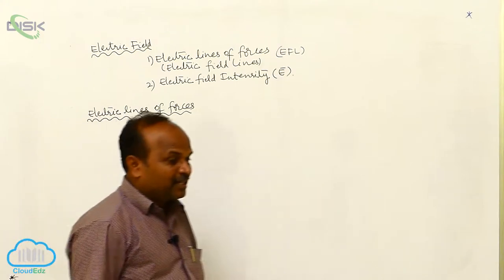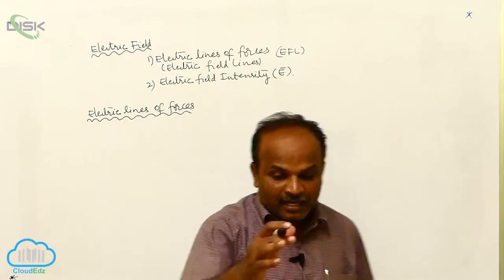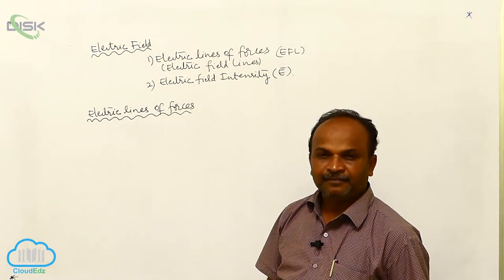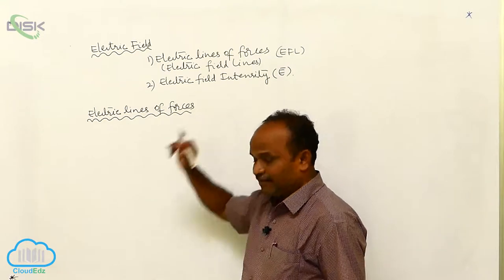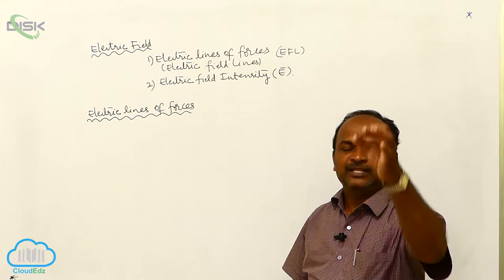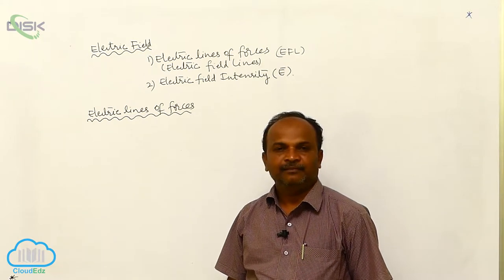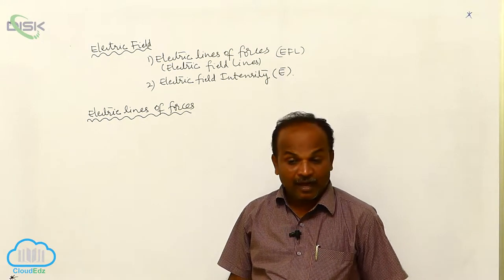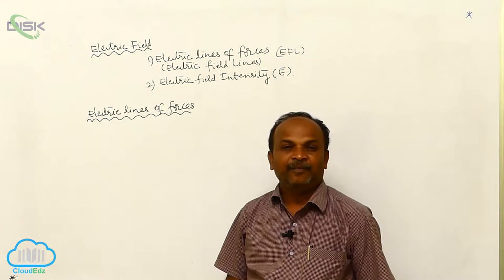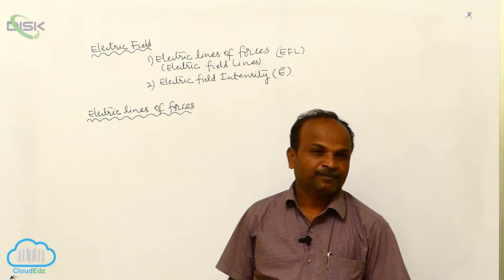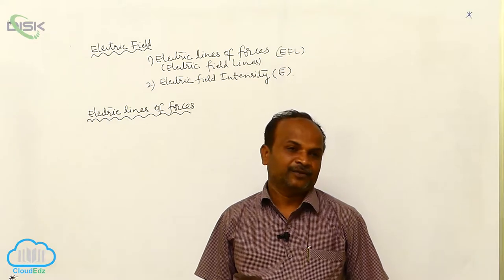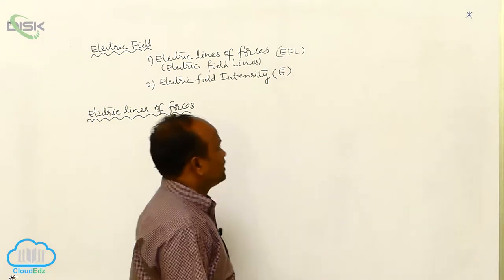To explain the behavior of the electric field, the concept of electric lines of forces was proposed by Michael Faraday. The definition of electric lines of forces: the path traveled by the unit positive charge in the electric field is called an electric line of force. In other words, if you place a unit positive charge in the electric field, the direction in which it tends to move is called an electric line of force.